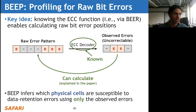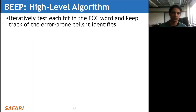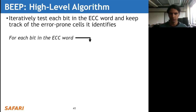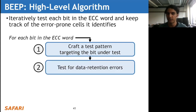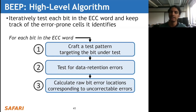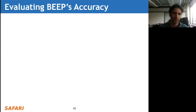Because we know exactly what the parity check matrix is, we know what's happening in the ECC decoder and can calculate what the raw error pattern is given the observed uncorrectable errors. BEEP is able to infer which physical cells are susceptible to data retention errors just by looking at the observed post-correction errors. At a high level, BEEP iteratively tests each bit in the ECC code word and keeps track of error-prone cells it identifies. For each bit in the ECC word, BEEP first crafts a test pattern targeting that bit using knowledge of the ECC function, tests for data retention errors, calculates the raw bit error locations corresponding to any uncorrectable errors observed, updates the list of known errors, and repeats for each bit in the ECC code word.